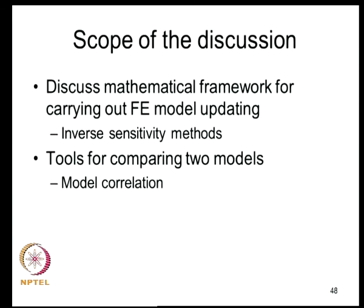This is a quick overview of the issues that arise when reconciling finite element model predictions with experimental data. In the next one or two lectures we will give a glimpse of basic issues related to finite element model updating: the discussion will be focused on the mathematical framework, specifically what is known as inverse sensitivity methods, and then on model correlation — the tools for comparing an experimental model with a mathematical model. At this stage, we will close this lecture.